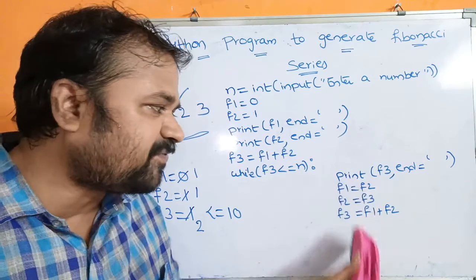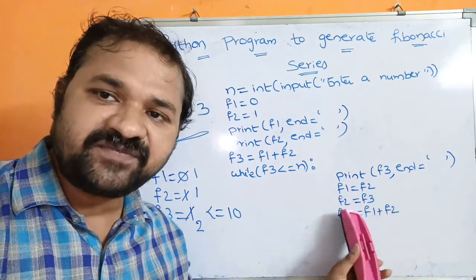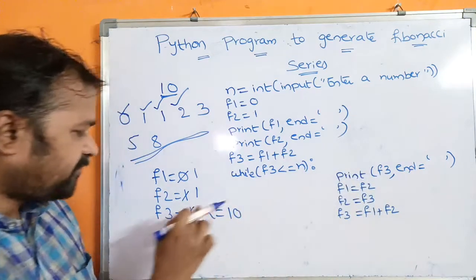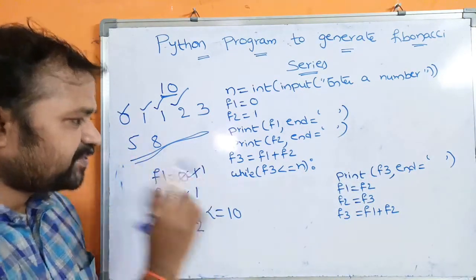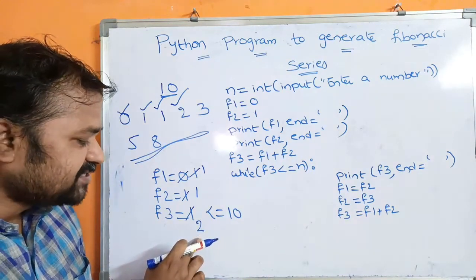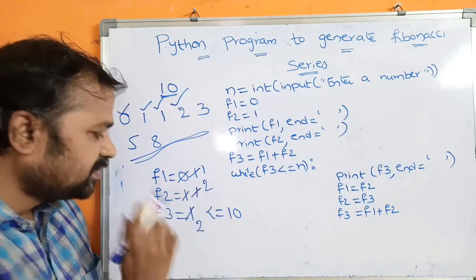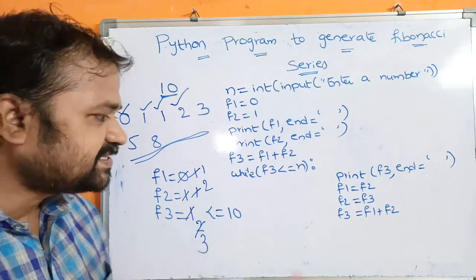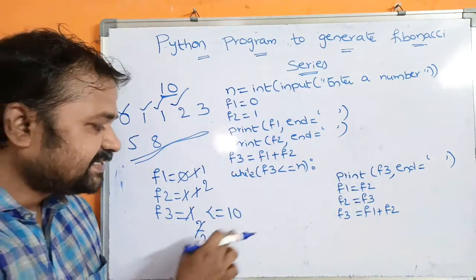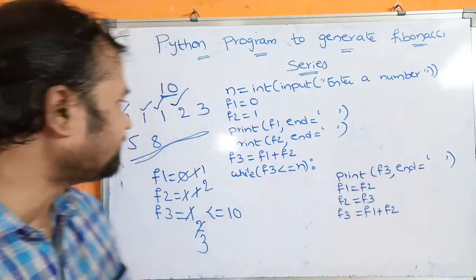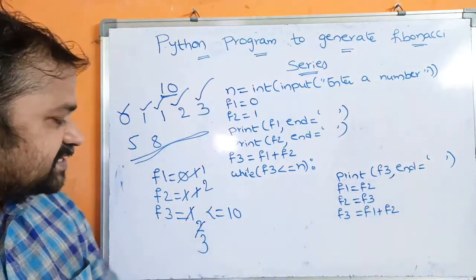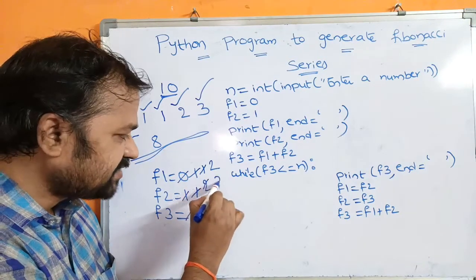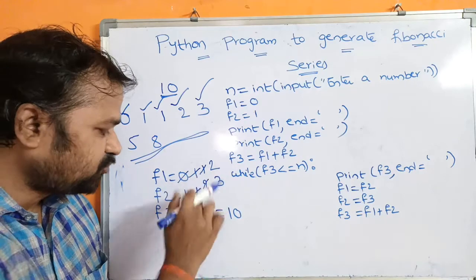Once again we perform the assignments: store f2 in f1, store f3 in f2, then calculate f3 based on f1 and f2. So f1 becomes 1, f2 becomes 2, and f3 is equal to 1 plus 2 means 3. Control goes to the while loop — 3 is less than or equal to 10, condition is true, so 3 gets printed. Next f1 becomes 2, f2 becomes 3, f3 is equal to 2 plus 3 means 5. 5 is less than or equal to 10, condition is true, so 5 gets printed.